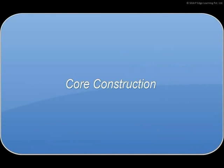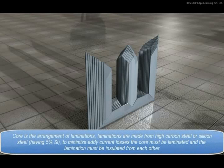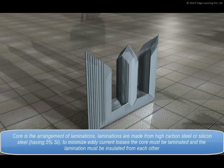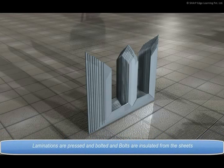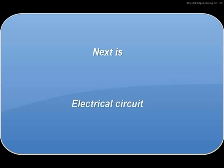Core Construction. The core is the arrangement of laminations. Laminations are made from high carbon steel or silicon steel having 5% silicon to minimize eddy current losses. The core must be laminated and the laminations must be insulated from each other. Laminations are pressed and bolted, and the bolts are insulated from the sheets.